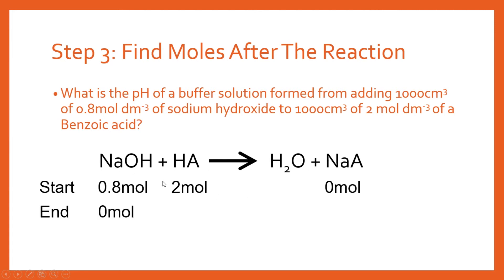At the end of the reaction, all 0.8 moles of NaOH are used up. The HA is in excess, so 0.8 moles of it react, leaving 1.2 moles of HA remaining. We produce 0.8 moles of NaA, because NaOH was the limiting reactant. We've now got the actual moles produced from this reaction.